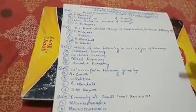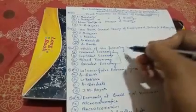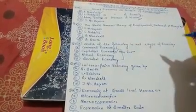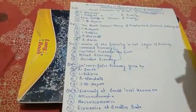Moving to the questions: 'Which of the following is not a type of economy?' As you know, there are three types of economy. The command economy is also known as the socialist economy — these two names refer to the same thing. The second is the capitalist economy, also known as the market economy. The third is the mixed economy. Here all options are types of economy, and the fourth one — laissez-faire economy — was given by Adam Smith.